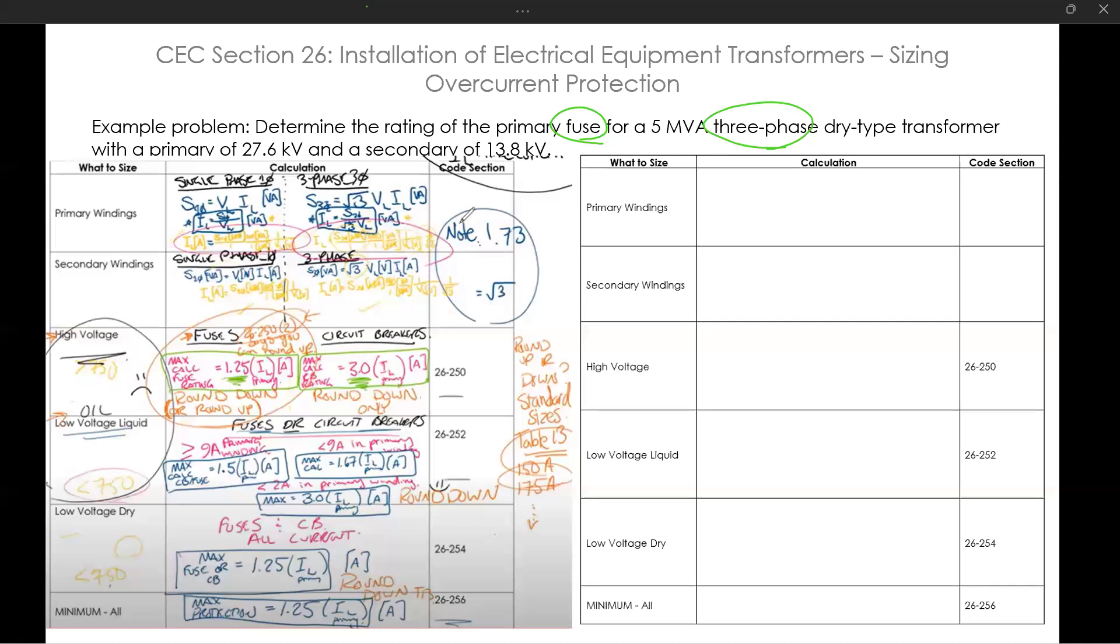So it looks like we already know that we are working here, we can take this three phase primary calculation and this three phase secondary calculation. And then we know that we are in a high voltage application here. Since we're in the high voltage application, and we're looking at a fuse, we are using 26-250.